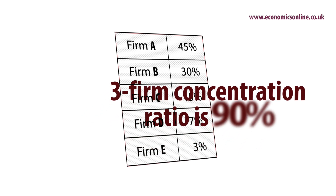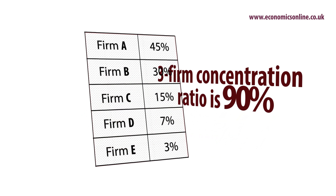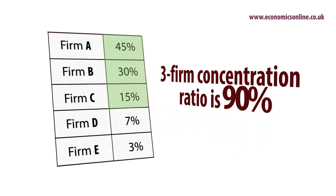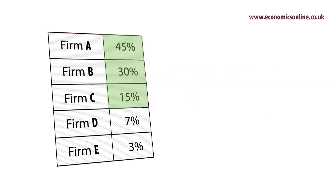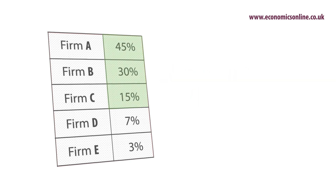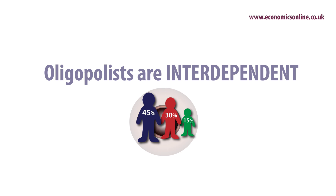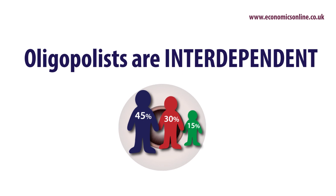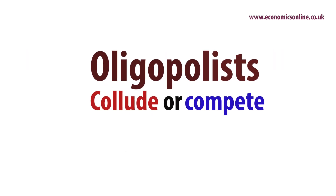The top three firms have a combined market share of 90%, making the market highly concentrated. Oligopolists are dependent on each other for their success or failure — they are interdependent. An action by one firm affects the others. Oligopolists may collude or compete with each other.